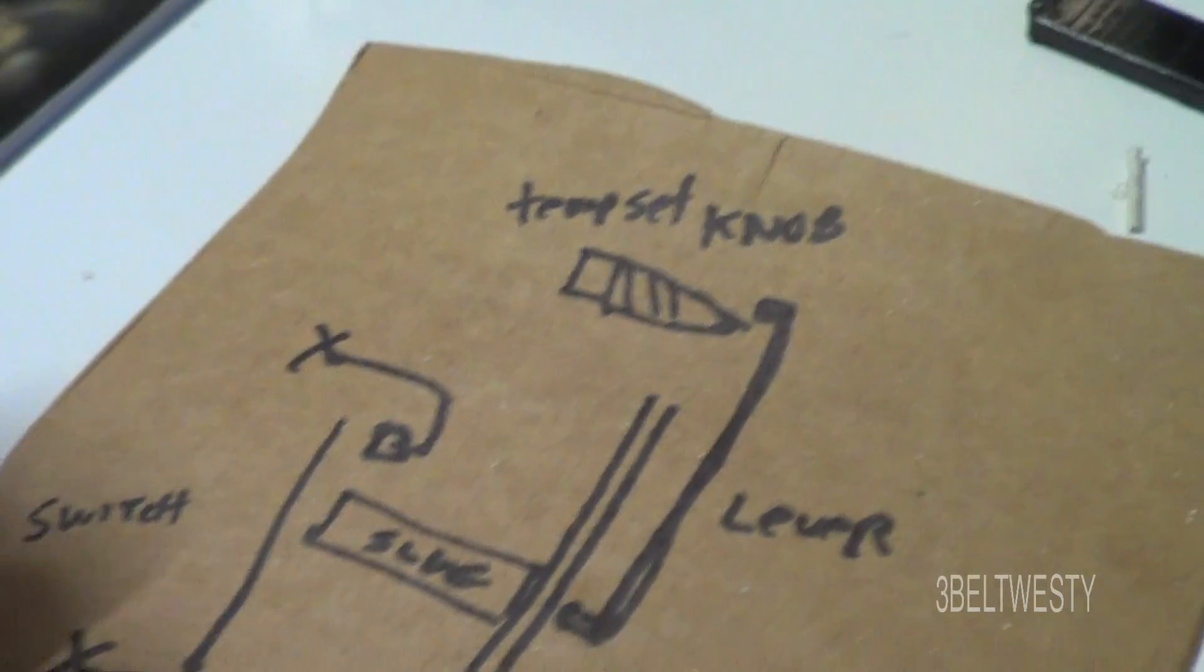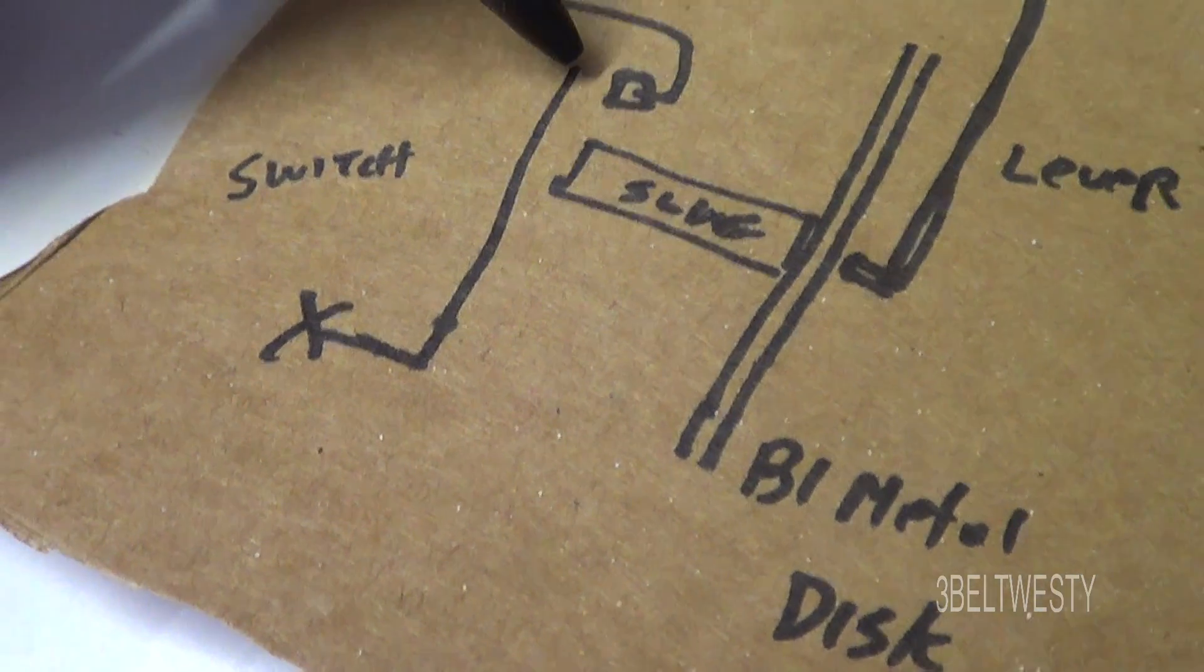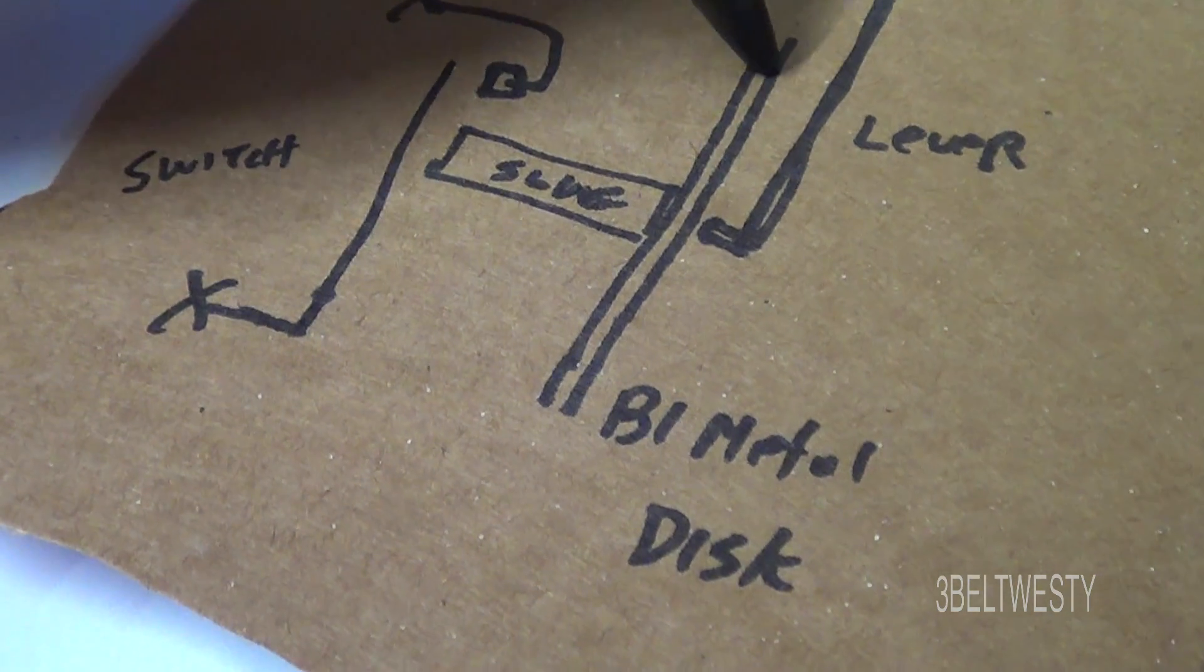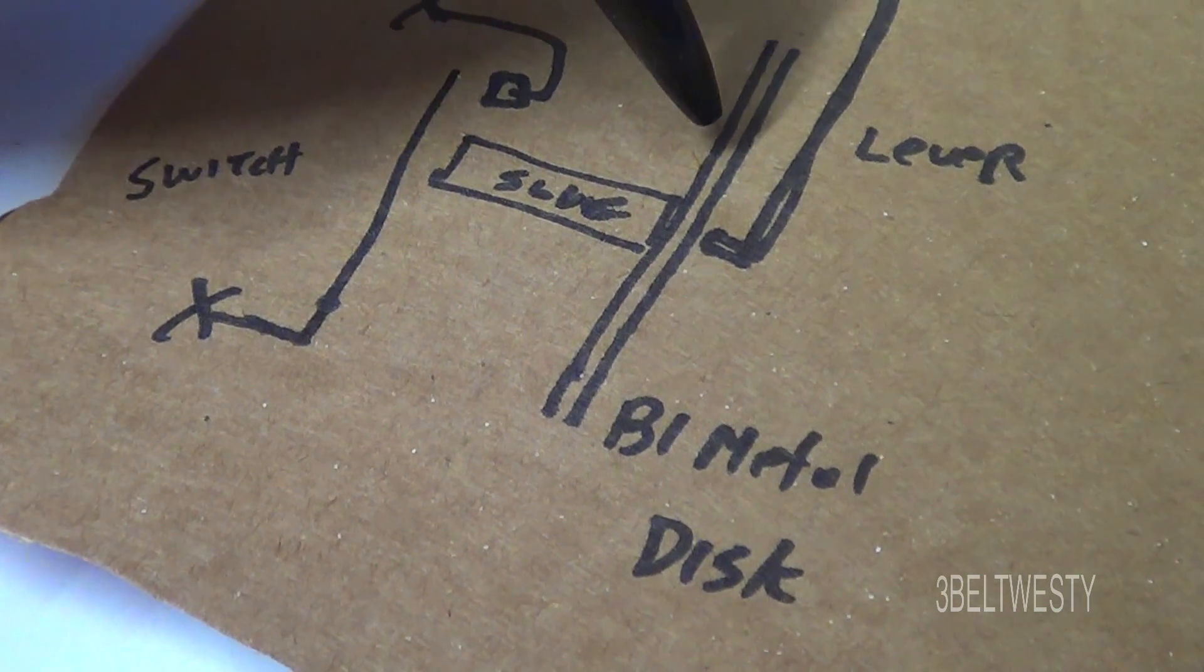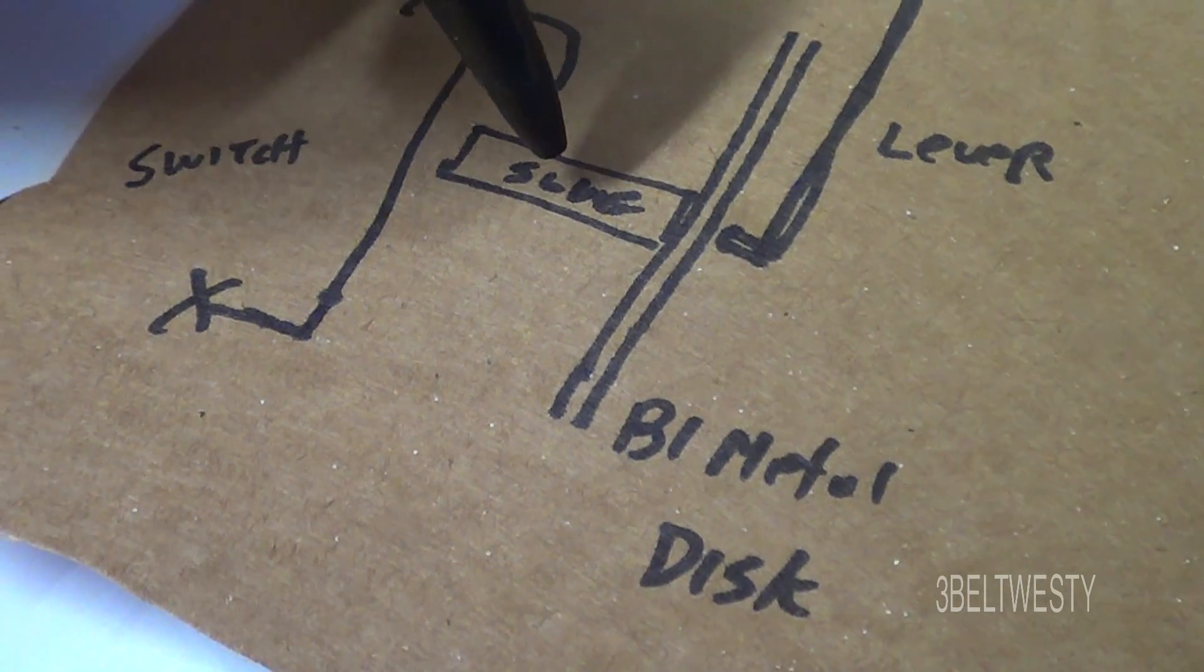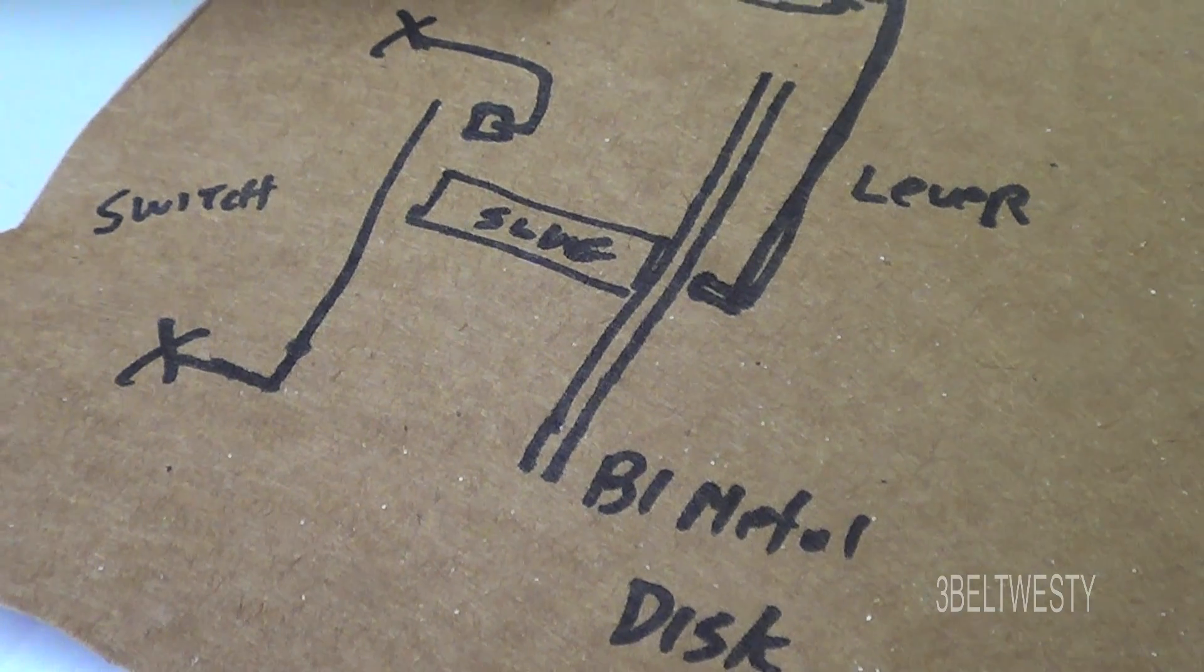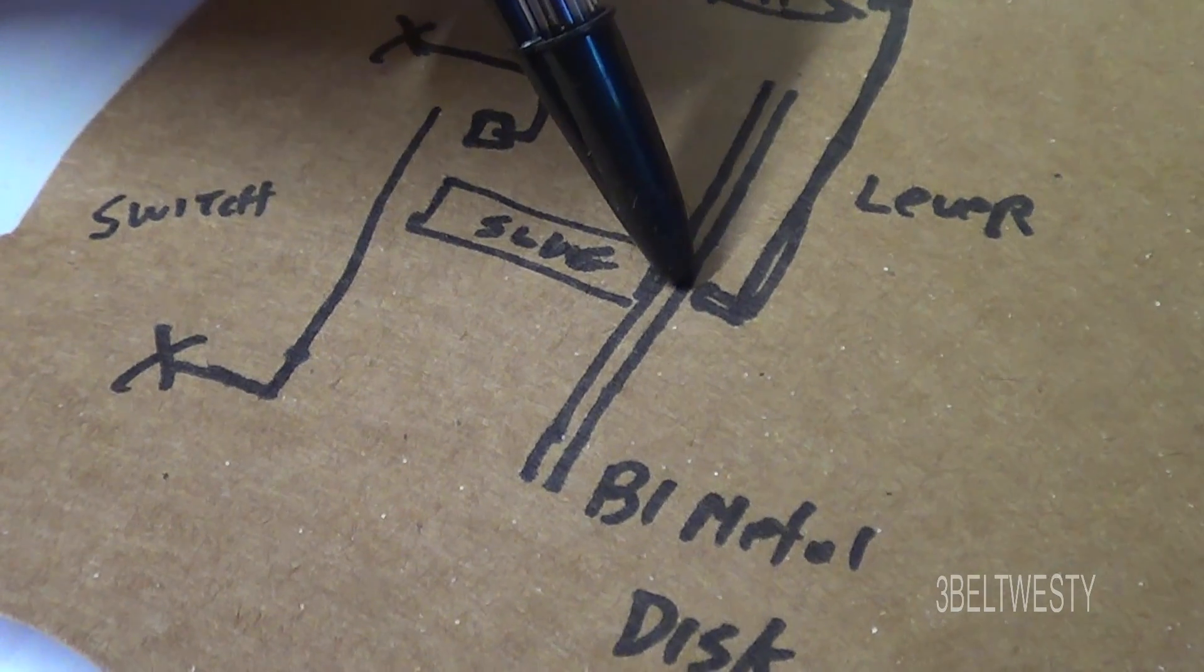Here's a diagram. You've got the switch. Here's the switch contact right here that goes back and forth. Here's this movable slug. And here's this bimetallic disc with the two sides of the material. So when it gets hot, it goes through and moves back and forth. The slug should move back and forth to turn the switch on and off.